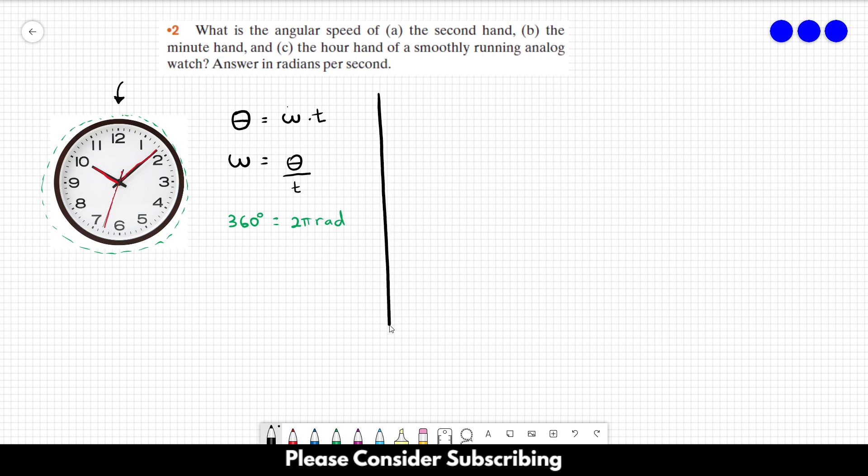Let's go for letter a. For letter a we are analyzing the second hand. We can use the information that it goes through a full circle in one minute. It starts, say, over here and does 360 degrees in one minute.